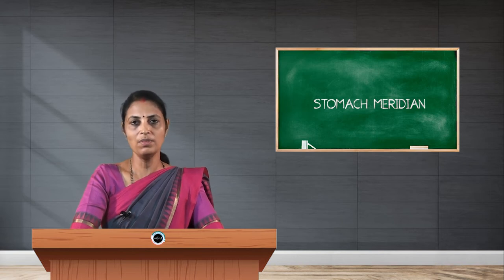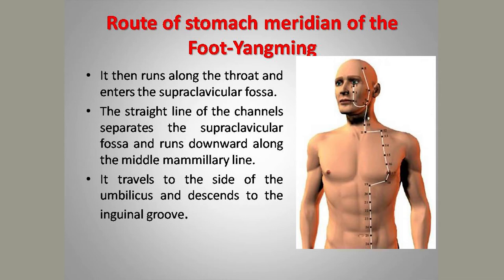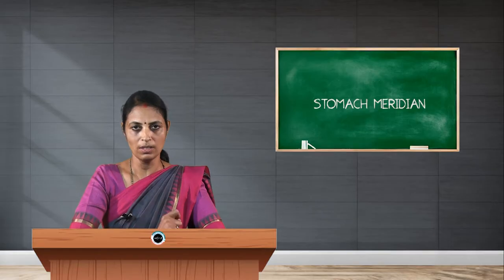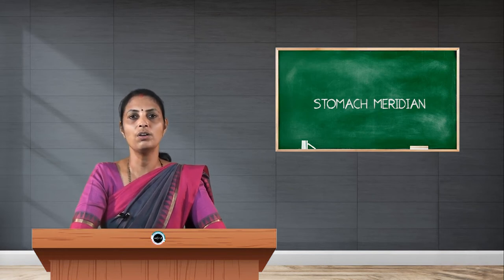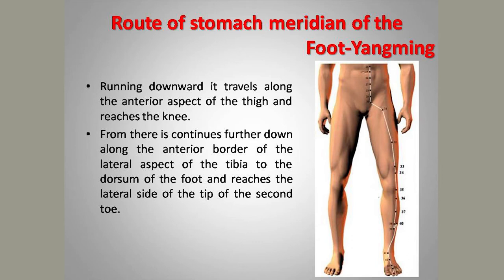The descending branch from the angle of the mandible descends downwards to the supraclavicular fossa and again divides into two branches — one superficial and one deep. The superficial branch runs along the chest on the mid-clavicular line and on the abdomen two cun lateral to the midline, running to the inguinal region where it communicates with the inner branch. The inner branch from the supraclavicular region enters deep into the chest, communicates with internal organs, descends to the stomach, communicates with the stomach and spleen, and descends to the inguinal region to communicate with the superficial branch.